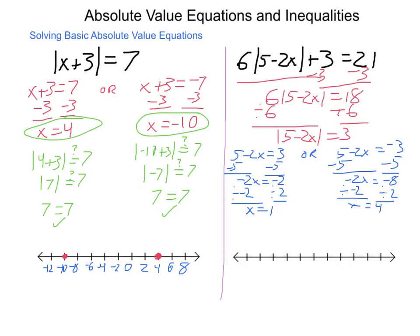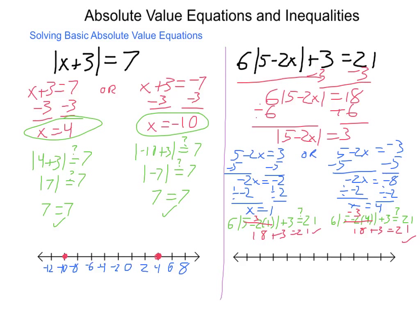I'm a little compressed on space so I'll abbreviate the check. Going through and simplifying: 2 times 1 is 2, 5 minus 2 is 3, 6 times 3 is 18, plus 3 is 21 — and that checks out. I need to plot the points 1 and 4 on the number line. Going through and doing that, my points are simply x equals 1 and x equals 4. Either of those will work, and again it is just the points — not the regions on either side or between them.